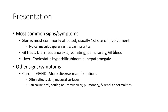Liver involvement presents with cholestatic hyperbilirubinemia and hepatomegaly. Chronic graft-versus-host disease has more diverse manifestations, often affecting skin and mucosal surfaces, and can cause oral, muscular, pulmonary, and renal abnormalities.